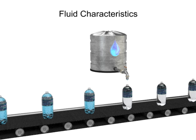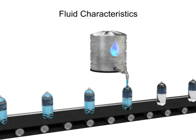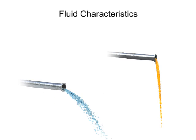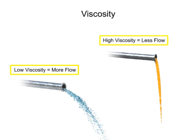Fluids used in mechanical systems come in many different types. The type of fluid chosen for a particular application depends on its characteristics. One of the most important characteristics of a fluid is its viscosity. Viscosity is defined as a fluid's resistance to flow.